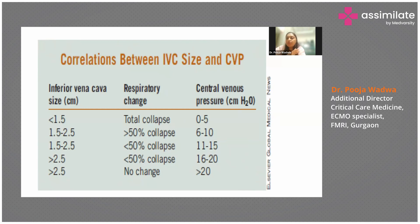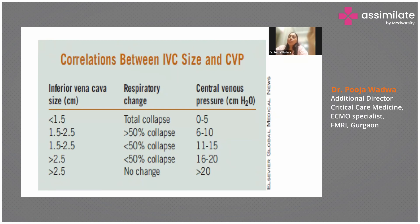If the IVC is more than 2.5 cm, the CVP is around 15 to 60, but these are not absolute values — you have to extrapolate them with the patient's clinical condition. The best way to assess is the collapse with respiratory changes. If the IVC collapses more than 50 percent during respiratory change, the patient requires fluids. If it is non-collapsible — less than 50 percent collapse — the patient is adequately filled.